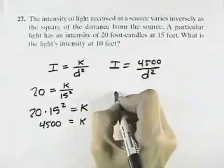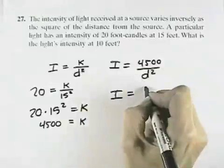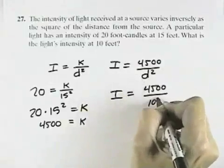what is the light's intensity at 10 feet? So we want I when the distance is 10. So we take 4,500 divided by 10 squared.